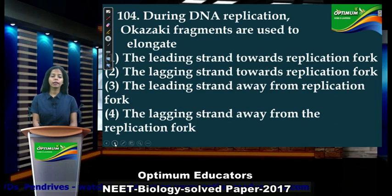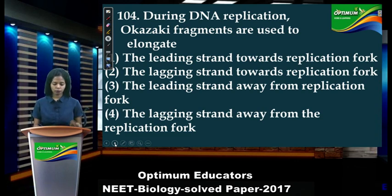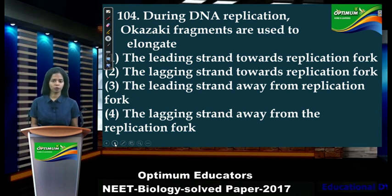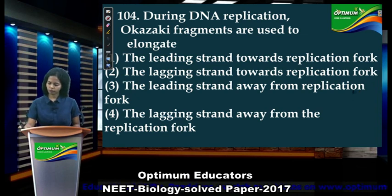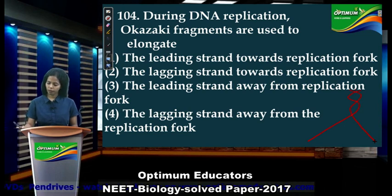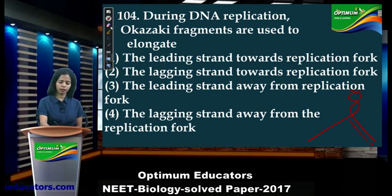Question 104: 'During DNA replication, Okazaki fragments are used to elongate...' Okazaki fragments are present in pieces on the lagging strand, so we eliminate options for the leading strand — options 1 and 3 are wrong. Between options 2 and 4, the lagging strand moves towards the replication fork. We will confirm our answer.